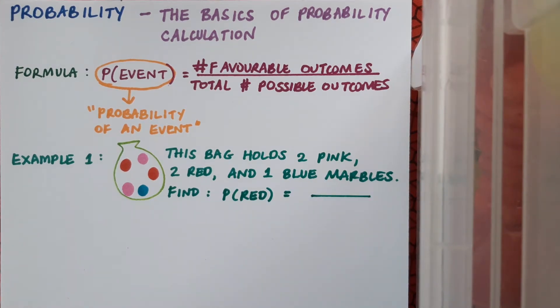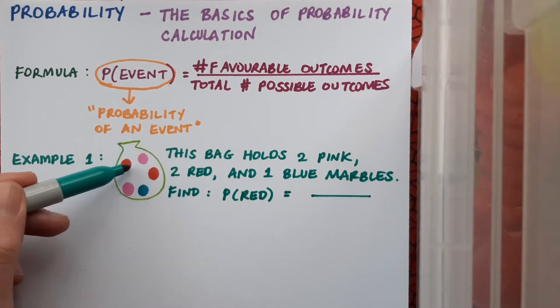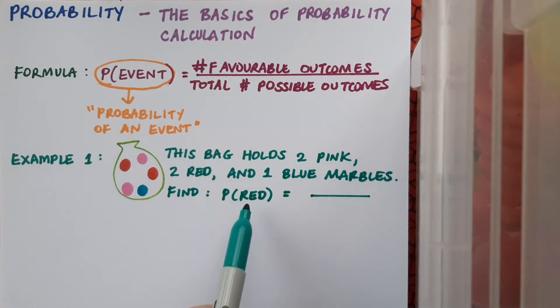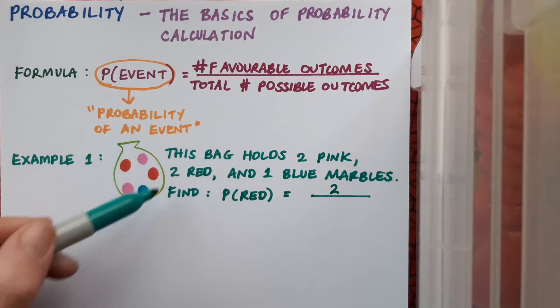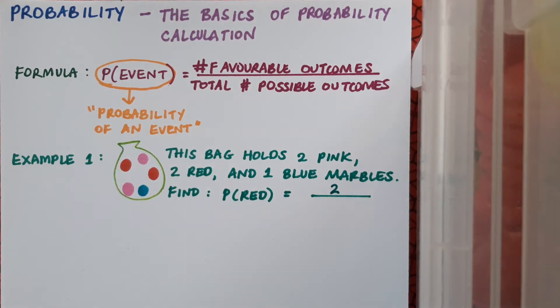I'll write my answer as a fraction, and on the top of the fraction I'll put in the number of favorable outcomes. When I look at the bag there are two red marbles that I could select, and it's red that I'm interested in. So I've got two favorable outcomes, and of course there's five marbles in total, so that's five possible outcomes. The probability of randomly selecting a red marble from this bag is two over five.